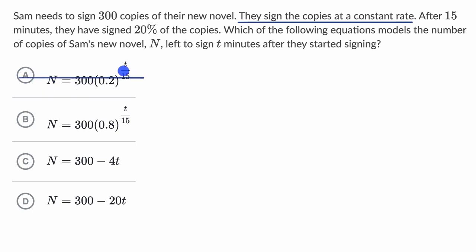So to figure out between these last two choices, let's set up a little table here where we know that T is in minutes and N is the number of books left to sign. And they tell us after 15 minutes, they have signed 20% of the copies. So after 15 minutes, what's N going to be?